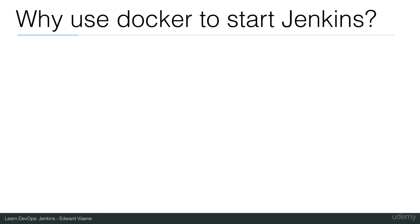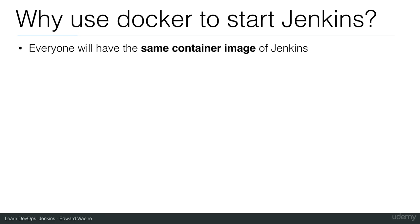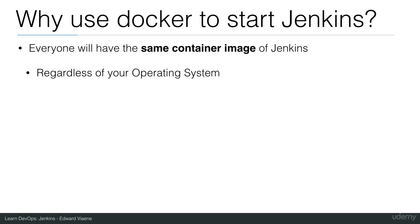So why use Docker to start Jenkins? Everyone will have the same container image of Jenkins — everyone who runs docker run with the Jenkins container will have the same image. The version can still change, so pulling the Jenkins image will always get the latest, but it will always be from the same repository. You will start the same container image with the same dependencies and the same Java version regardless of your operating system.